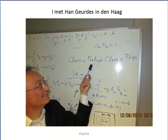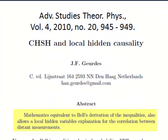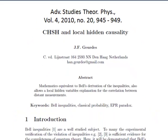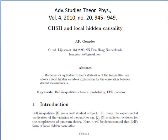If it is all classical, where are the quantum correlations Bell's inequalities are supposed to quantify? There are none. The mathematics equivalent to Bell's derivation of the inequalities also allows a local hidden variable explanation for the correlation between distant measurements. He has proved non-local correlations are not needed — he is talking about local hidden variables, not non-local ones.